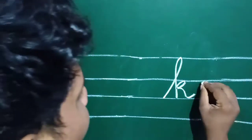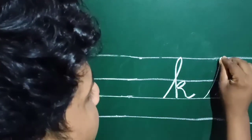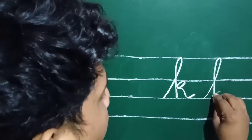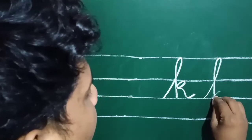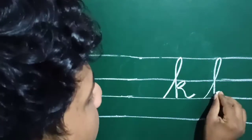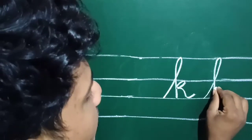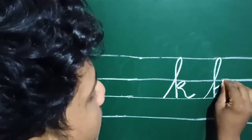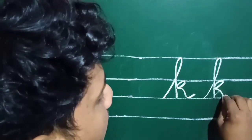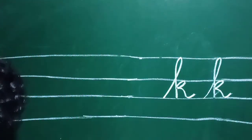Once again — go like this, go like this. Then start from here again. This is small letter K.